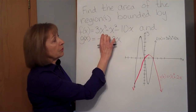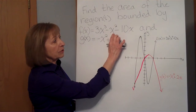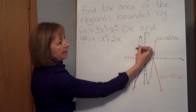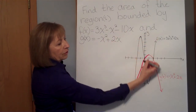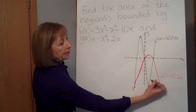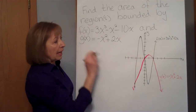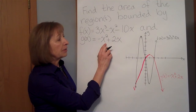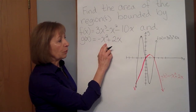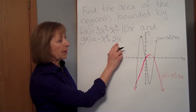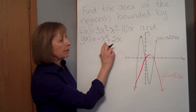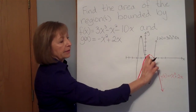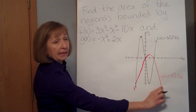I've graphed f(x) = 3x³ - x² - 10x, which is this curve in black. And then I've also graphed g(x) = -x² + 2x. So that's a parabola going down — that's the curve in pink.